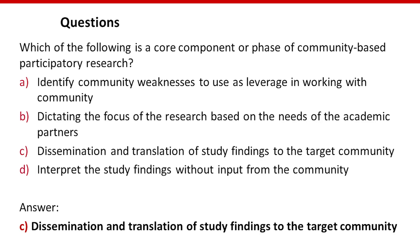Our first question is: which of the following is a core component or phase of community-based participatory research? A, identifying community weaknesses to use as leverage in working with community. B, dictating the focus of the research based on the needs of the academic partners. C, dissemination and translation of study findings to the target community. D, interpret the study findings without input from the community. The answer is C, dissemination and translation of study findings to the target community.